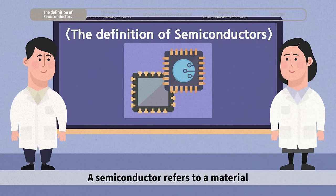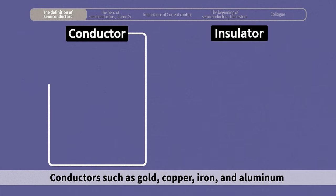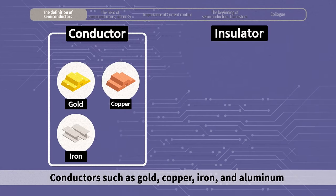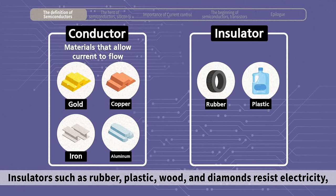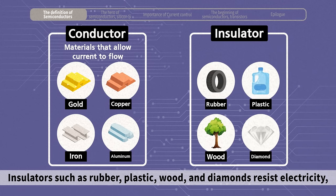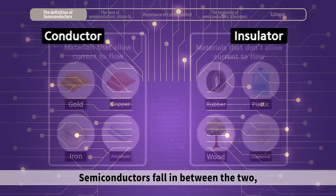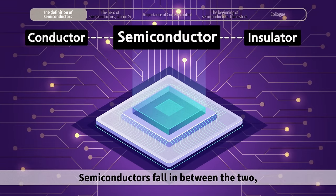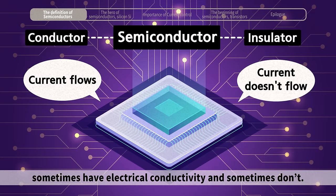By definition, a semiconductor refers to a material that sits between the conductor and an insulator. Conductors such as gold, copper, iron, and aluminum are materials that allow electricity to flow. Insulators such as rubber, plastic, wood, and diamonds resist electricity, meaning that in an insulator, electric current cannot flow. Semiconductors fall in between the two, which means that semiconductors sometimes have electrical conductivity and sometimes don't.